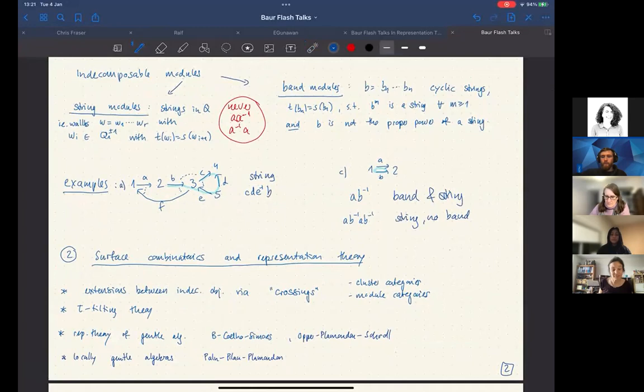Surface combinatorics have been used a lot in representation theory in the last 10, 15 years already. For example, you can describe, and this list is not going to be exhaustive, but just a few topics.